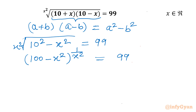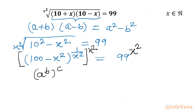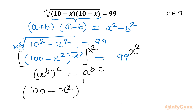Let's raise both sides to the power x squared. Now we know the property of exponents: a power b, whole power c, can be written as a power b times c. So I can write our LHS as (100 minus x squared) whole power (1 over x squared), raised to x squared. The powers multiply, so x squared cancels with x squared, leaving 1.